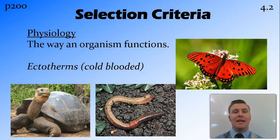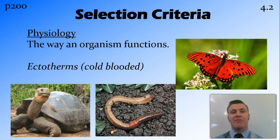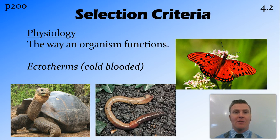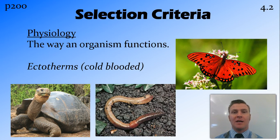Another thing you can look at is physiology, or the way that something functions on a cellular level. For example, we could look at ectotherms, or cold-blooded animals. In this group we would have turtles, worms, and butterflies — all cold-blooded animals.